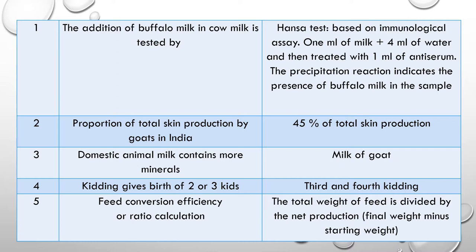Question 2: What is the proportion of total skin production by goats in India? This is an important question. The answer is 45% of total skin production is by goats only — nearly a 50% contribution.